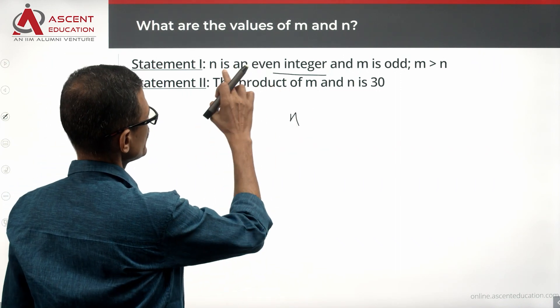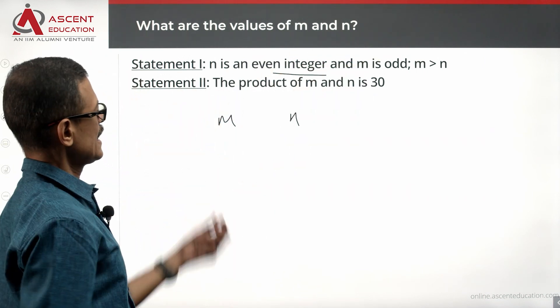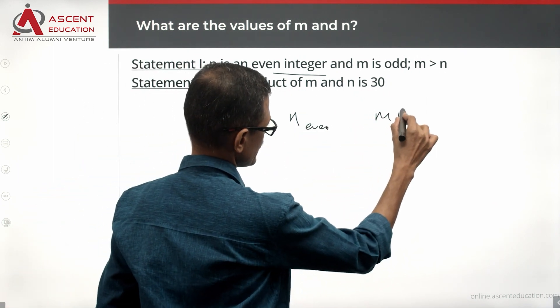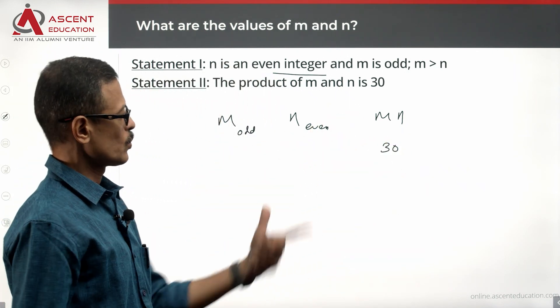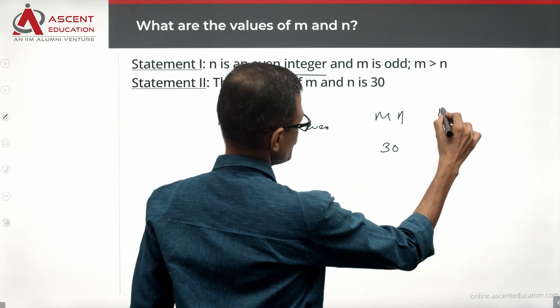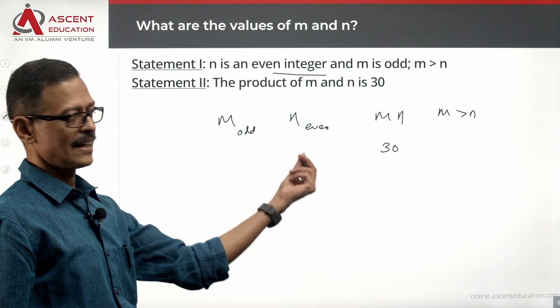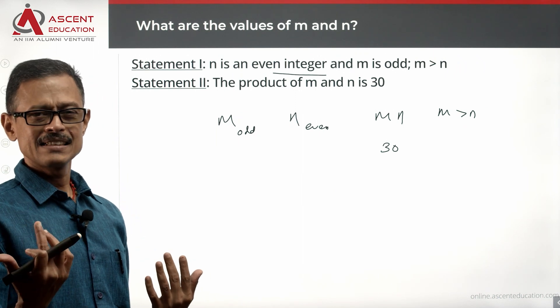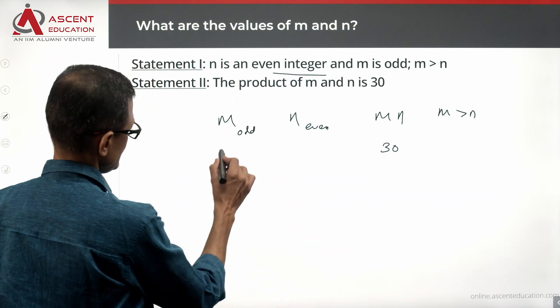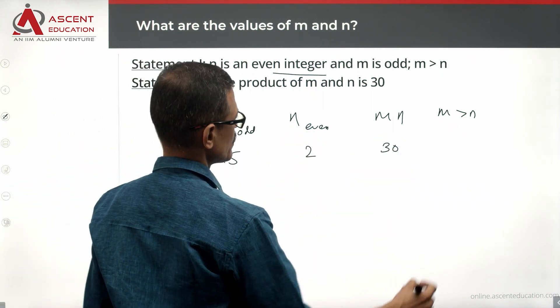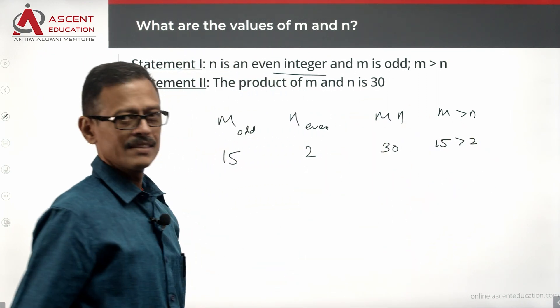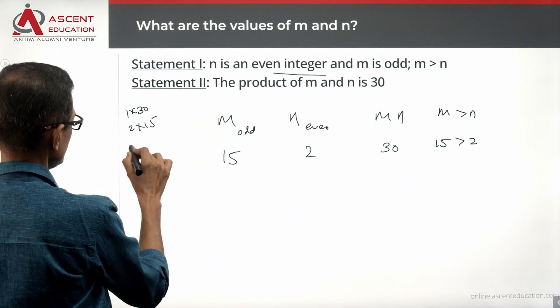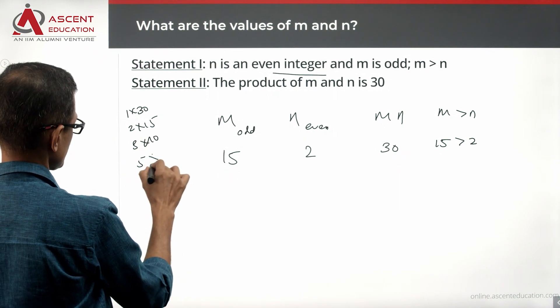M should be odd, N should be even, M should be greater than N, and the product should be 30. Now, 6 into 5 is what comes to our mind. But M should be greater than N, so 5, 6 is not going to work. Let us check out what else could work. 10 and 3? No, that is not working. 15 and 2 will work. M is odd: 15. N is even: 2. M into N equals 30. M, 15, is greater than 2. Super. Let's see all the values. It could be 1 into 30, 2 into 15, then you have 3 into 10, and then you have 5 into 6.